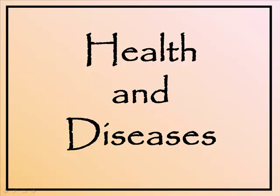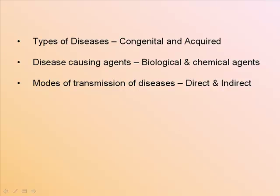Health and diseases: types of diseases are congenital and acquired. Disease-causing agents are biological and chemical agents. Modes of transmission of diseases are direct and indirect.